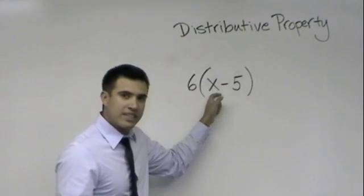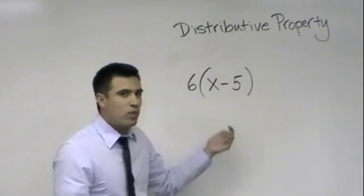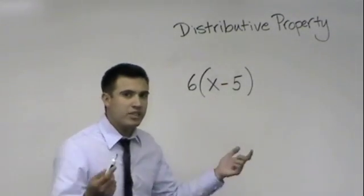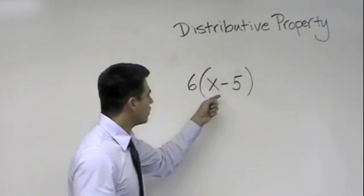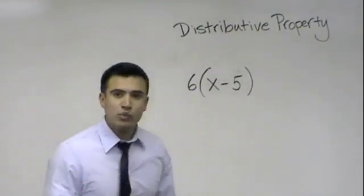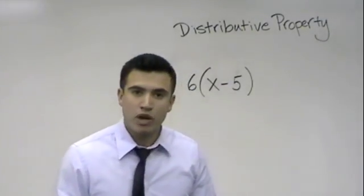You'll learn later on that these are called unlike terms because we don't know what x is. x could be a million or x could be one. So, until we know what it is, we can't combine them. And that is why we use distributive property.